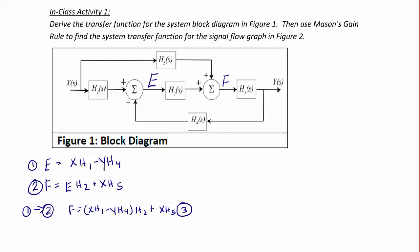So F is equal to the quantity XH1 minus YH4 times H2 plus XH5. And we're going to label this equation E3. Equation E4 is going to be the output of the entire block diagram Y.